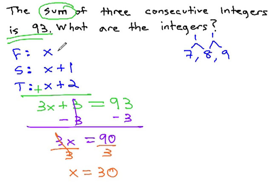x is what we use to represent the first number. x is 30. The next consecutive integer, x plus 1, 30 plus 1 is 31. And the next one, x plus 2, 30 plus 2 is 32.